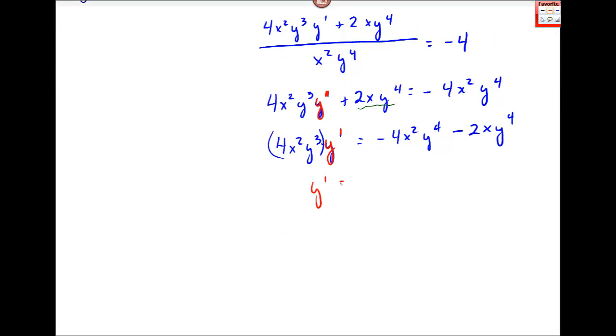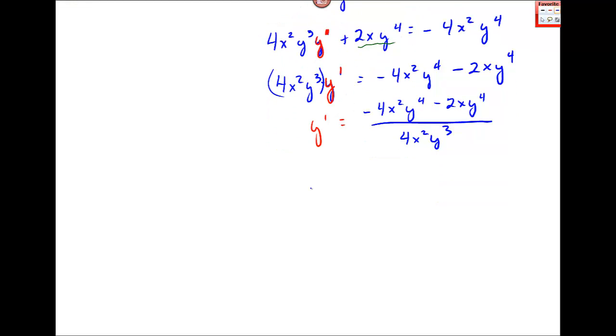You should be able to simplify this by factoring out a greatest common factor. So y' equals—on top I have a negative 2, an x, and a y⁴. And when I take that out, I'm left with 2x, and then plus 1 (since I have 2xy⁴ plus 1). And then down here I have 4x²y³.